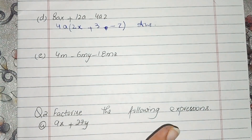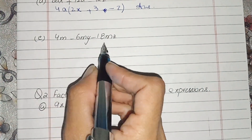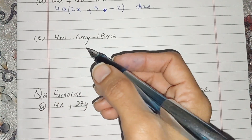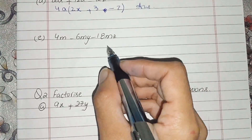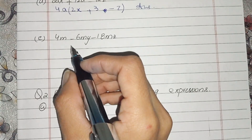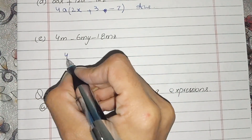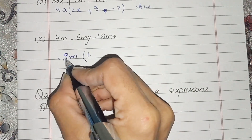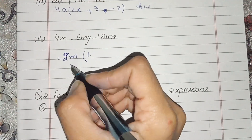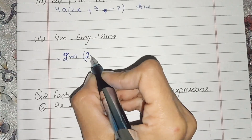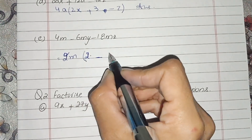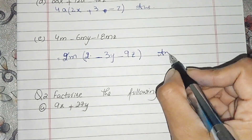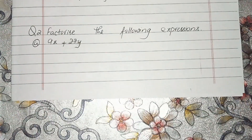Now students, e part. In e part, observe that 2 is common. 4 cannot be taken because 4's table does not include 6. So 2 is common here, and left is minus 3y and minus 9z. This is the answer of e part.